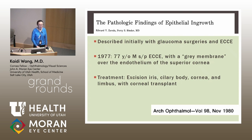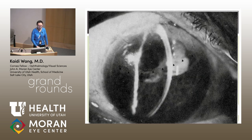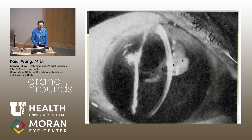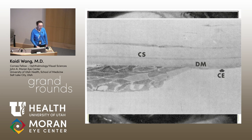The surgeons elected to treat him by excising his iris, ciliary body, cornea, and limbus with a corneal transplant — hence why we have pathology. Here you can see a photograph where the black arrowheads are pointing to that gray sheet of cells. And here's the pathology: you can see the epithelial cells actually growing over Descemet's membrane (DM) and the corneal endothelium (CE); CS indicates corneal stroma.